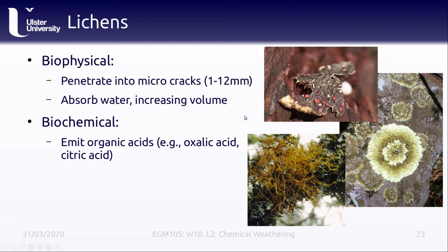Another group of important biological weathering agents are lichens, which contribute to both physical and chemical weathering. Physically, the hyphae — the root system of the lichen — penetrate into small cracks in the rock, and as they absorb water they increase in volume, helping to propagate cracks. Lichens also emit different organic acids such as oxalic acid and citric acid, so they can break down rocks both physically — making them smaller and smaller and exposing more surface area — and chemically by producing acids that eat the rocks away.